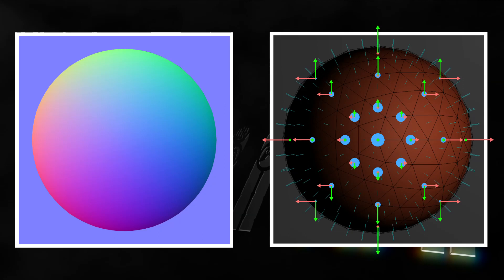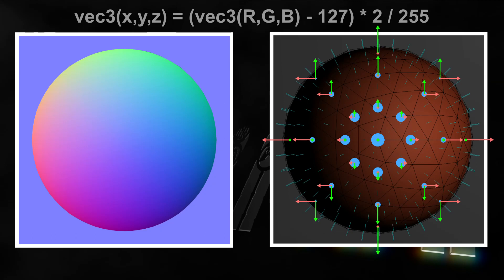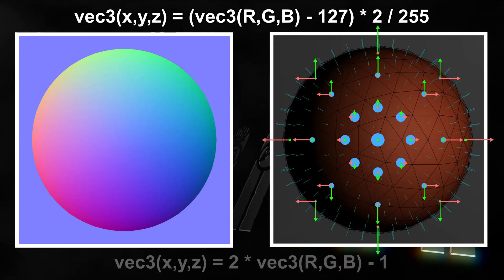The last step is converting the RGB value into a normal vector. Luckily that part is really simple. We just need to convert the value ranges, so 0 to 255 becomes negative 1 to positive 1. Or inside the shader even simpler, since the colors range from 0 to 1 already: vec3 xyz of normal equals 2 times vec3 RGB minus 1.